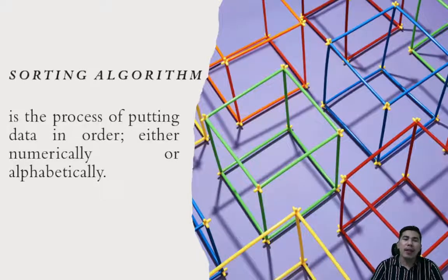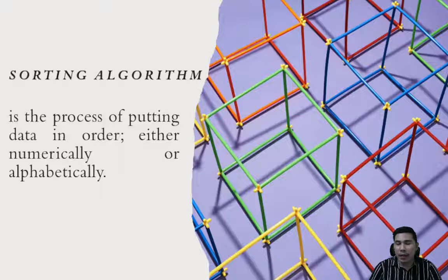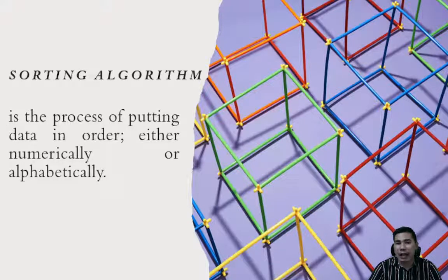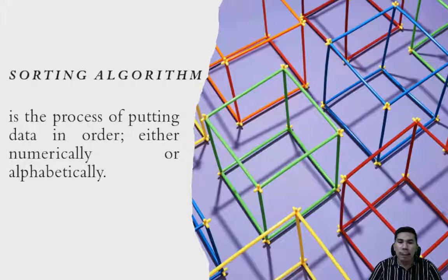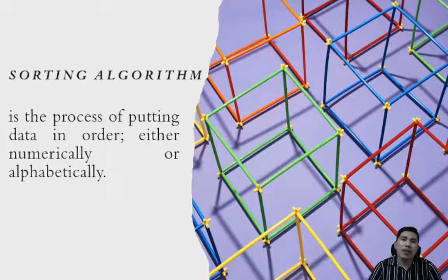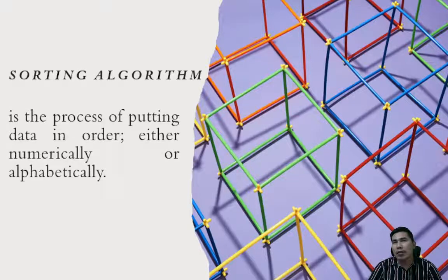Sorting is a process of putting data in order — either numerically, alphabetically, or lexicographically. It is often necessary to arrange elements in an array in numerical order from highest to lowest or lowest to highest. Sometimes we also do string sorting, either in ascending or descending alphabetical order, using ASCII values, though our programming language has a built-in mechanism for sorting string data in an array.